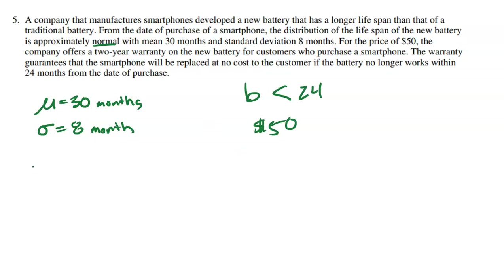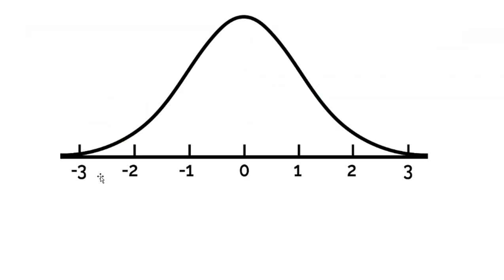Before we dive into parts A, B, and C, I want to do something really important. Anytime you read a problem that's normally distributed, it's important to make a model to show that. Here is a normal distribution — smack dab in the middle, a Z-score of 0, and the standard deviations from the mean would be 30. We have a standard deviation of 8, so going up 1 gives 38, up another gives 46.